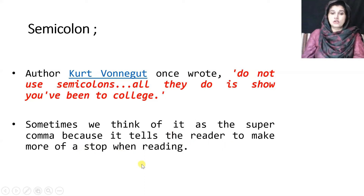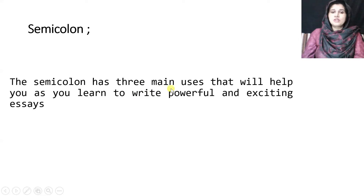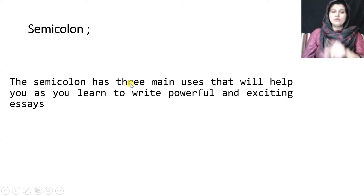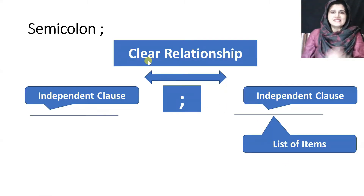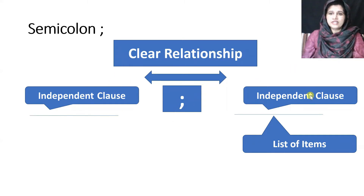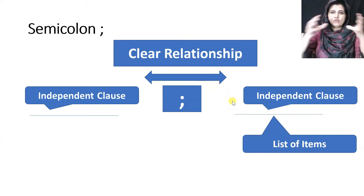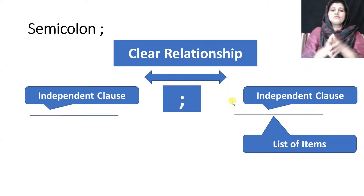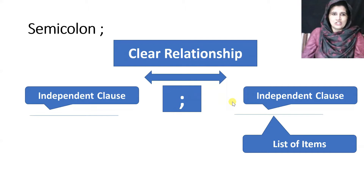The semicolon has three main uses that will help you write powerful and exciting essays, and we'll discuss all three major uses in detail today. Semicolons show the relationship between two independent clauses, or between one independent clause and a list of items. It is a clear, two-sided relationship — both clauses have a close connection with each other in terms of idea and content.